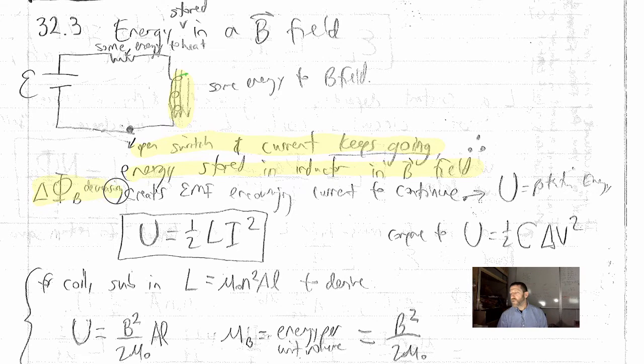So there is energy stored in the inductor and it's stored in the magnetic field. If the magnetic flux is decreasing, it creates an EMF causing that current to continue. Now, U is our symbol for potential energy. The potential energy stored in an inductor is one-half L, the inductance of that coil, times I squared.